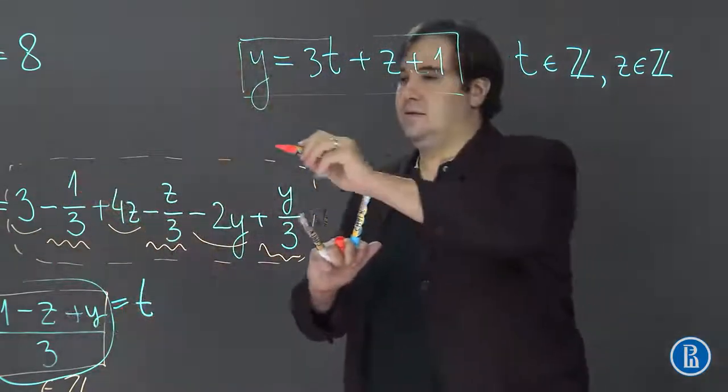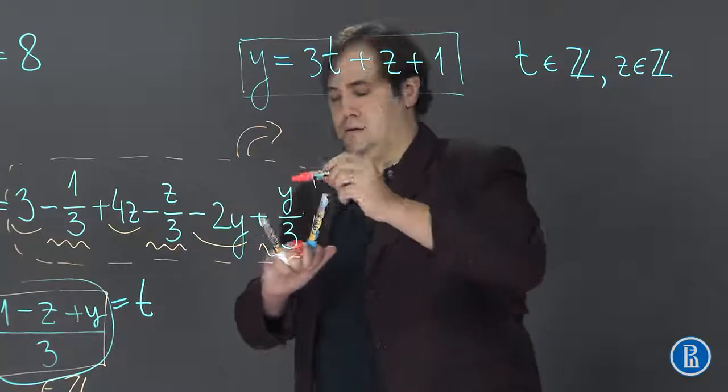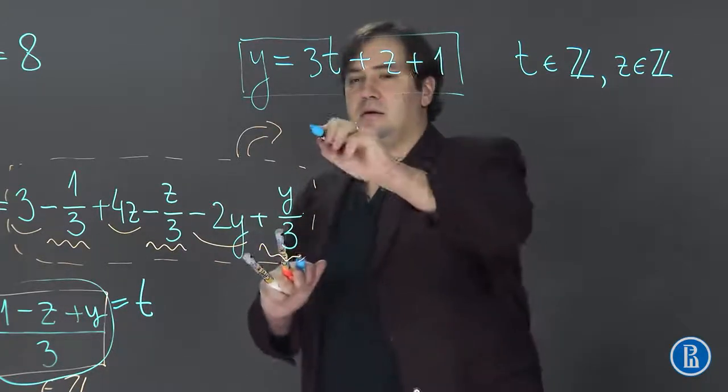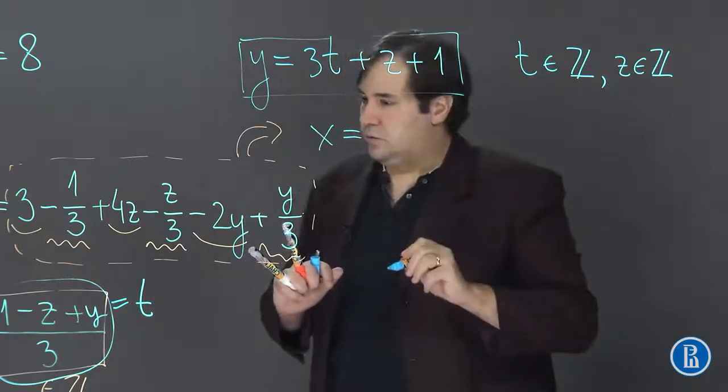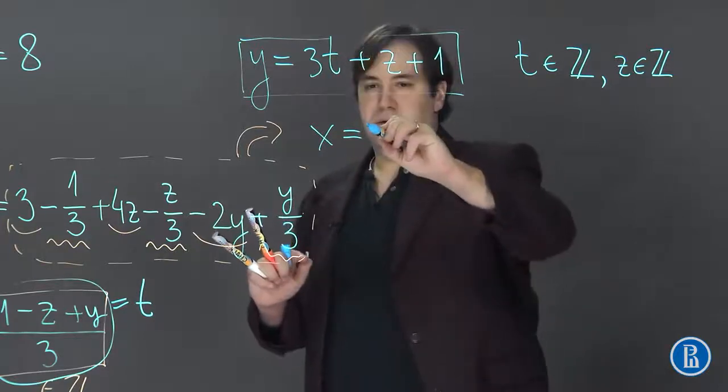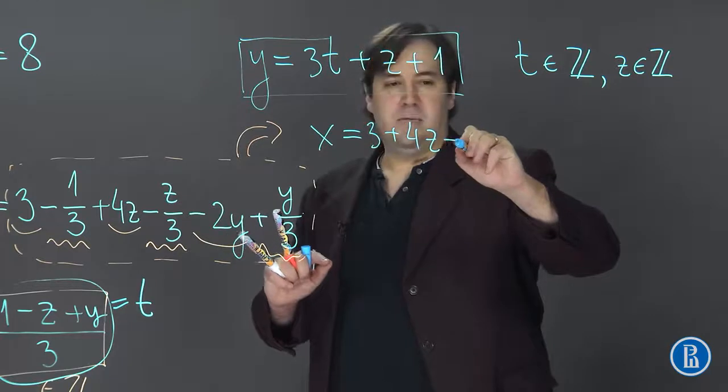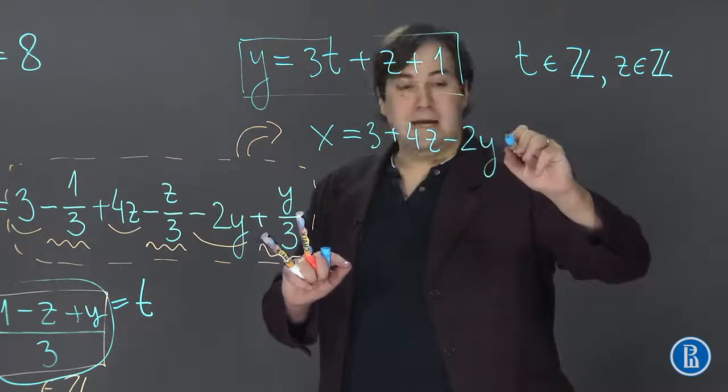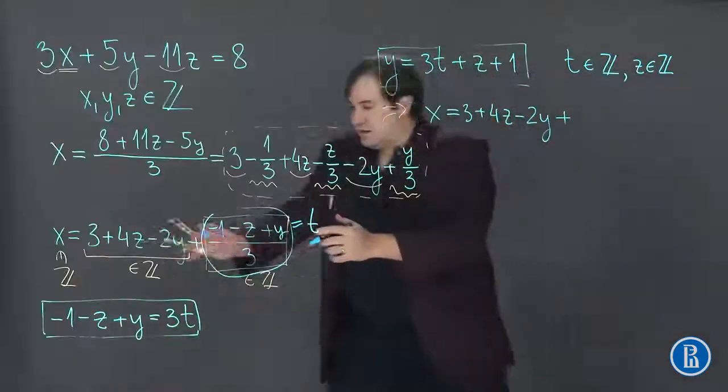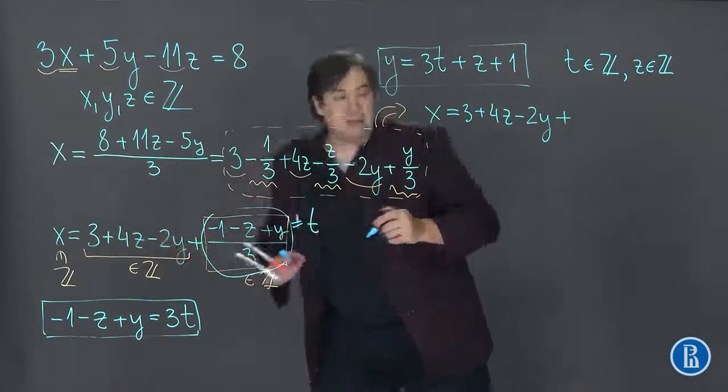And we can do this by using this expression here. So x is equal to 3 plus 4z minus 2y and plus t.